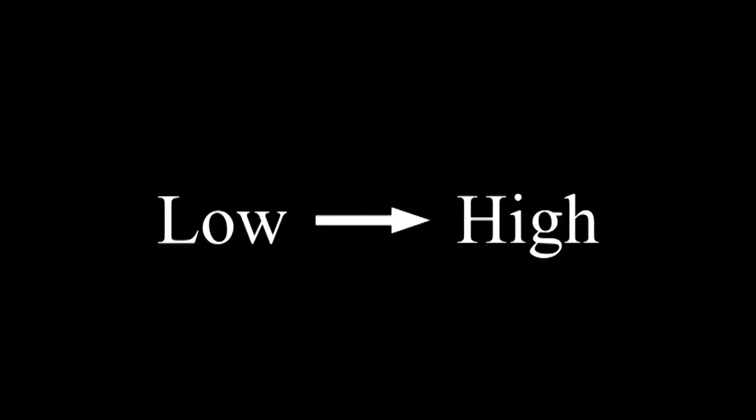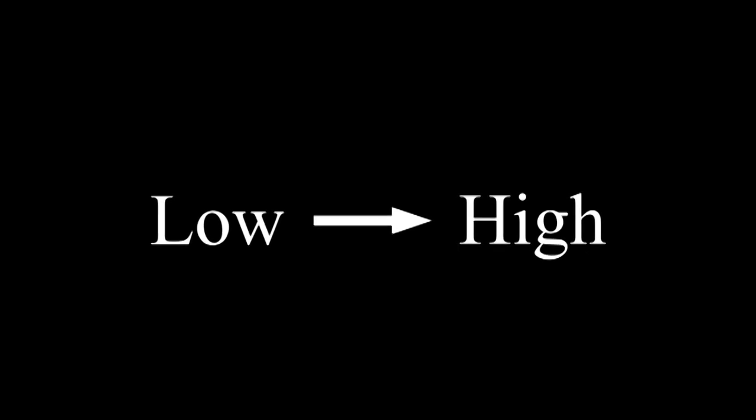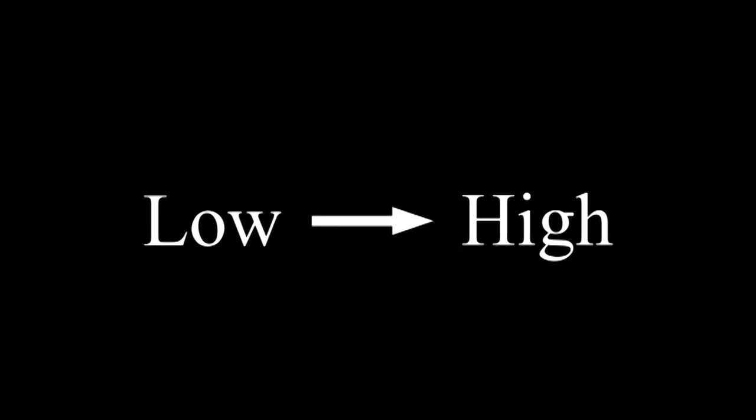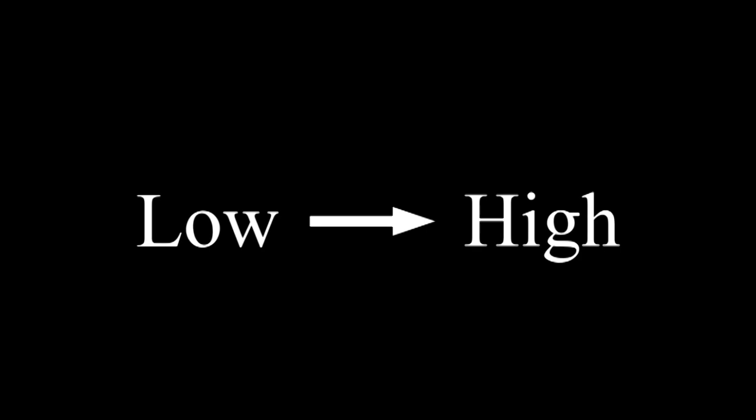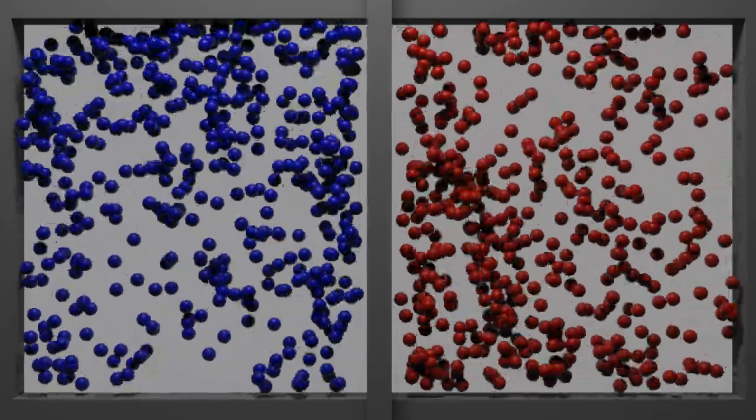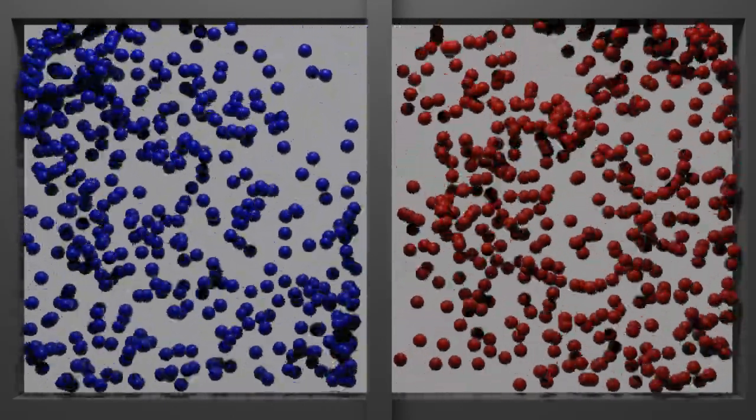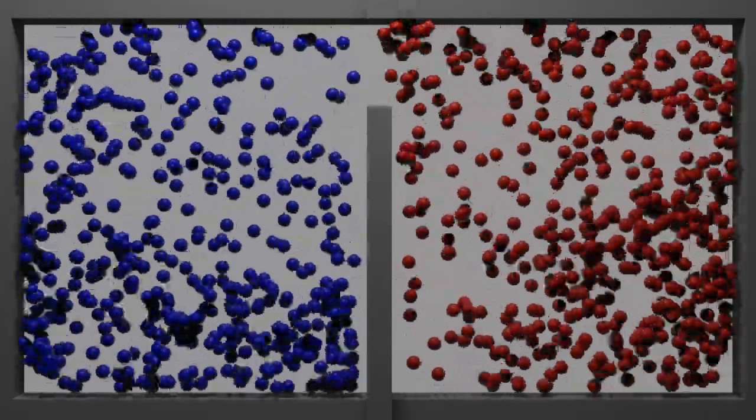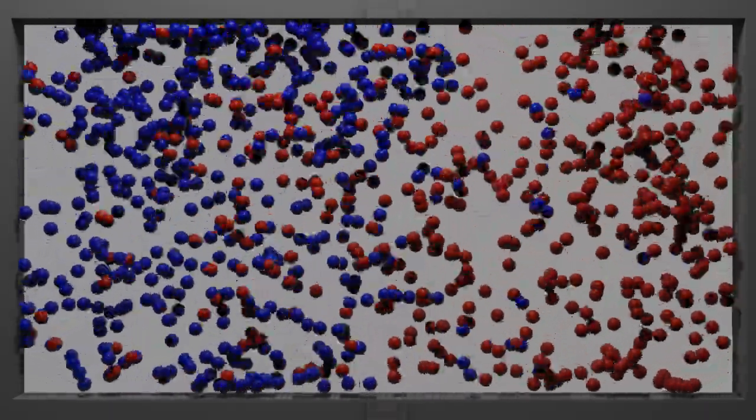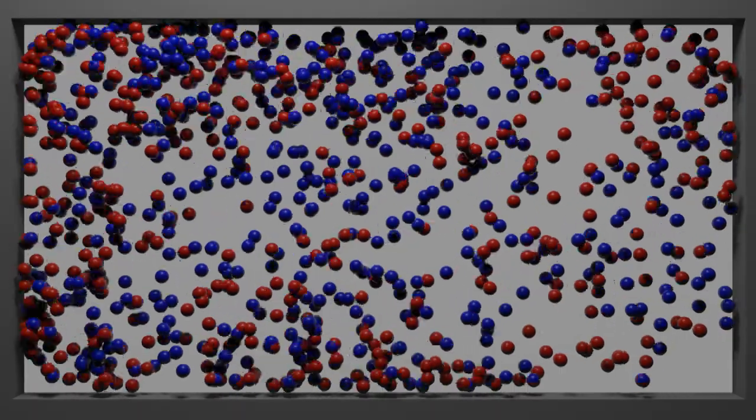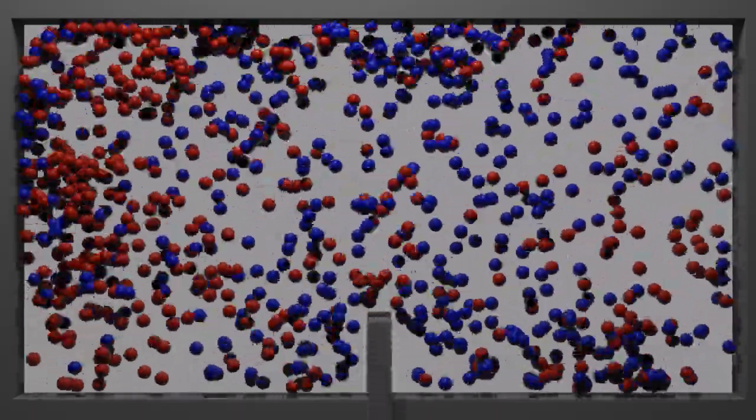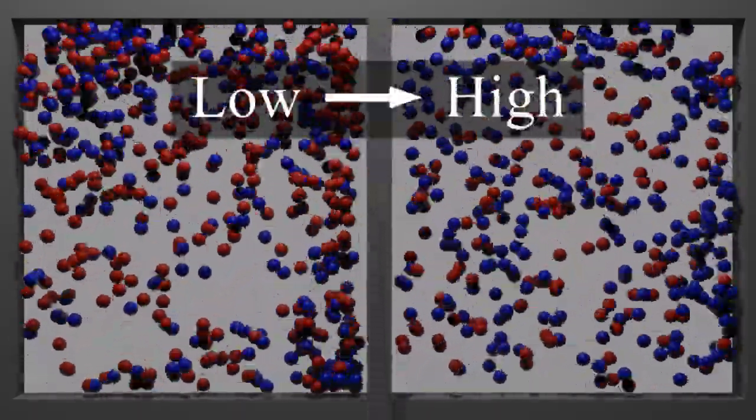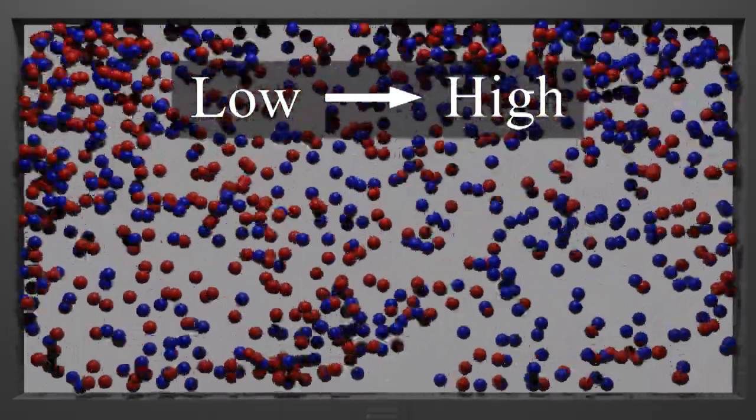This one fact that entropy is always increasing explains so many things. It's why air is evenly distributed. Suppose we have two boxes with two different kinds of gases. Remove the barrier between the boxes and the two gases mix. It's almost impossible to put the gases back in their original box. We have moved from low entropy to high entropy.